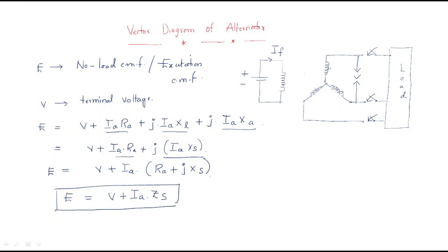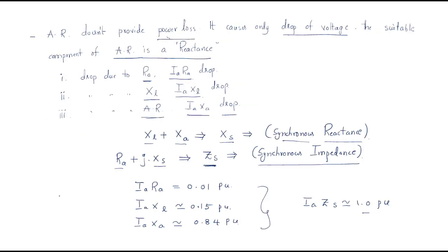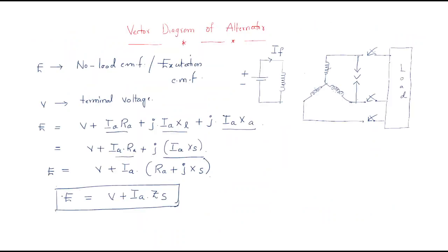These are the equations useful to draw the vector diagram of the alternator. We have covered the synchronous motor armature reaction, the different voltage drops available in the synchronous machine, and the vector diagram of the alternator. I hope all of you understood the session. Thank you.